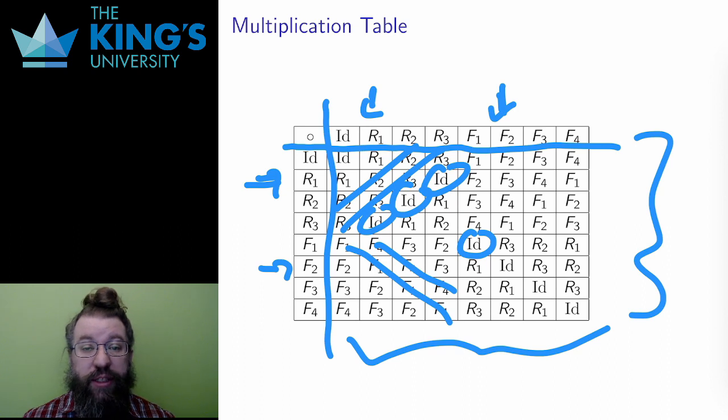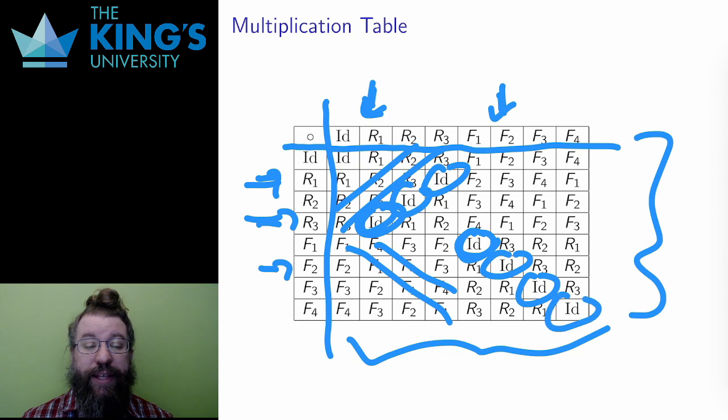In particular, the identity shows inverses. R3 composed R1 is the identity, which means that R3 is the inverse of R1, since that was the definition of the inverse, something that you multiply by to get the identity. For the reflections, every reflection is its own inverse, since F1 composed with F1 is the identity, and this also makes some sense, since doing a reflection twice undoes the reflection, returning everything back to where it was, and that's the identity.